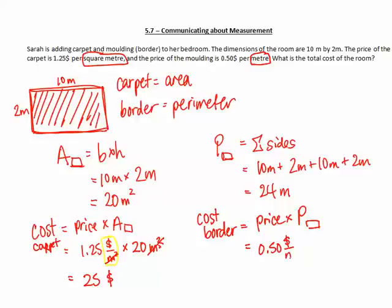This helps us actually know that the molding is a perimeter or a distance, whereas the carpet was an area. So $0.50 per meter times, and we look at the perimeter, it was 24 meters.